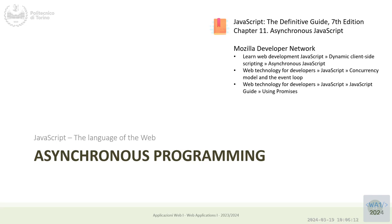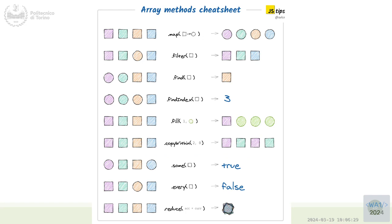You remember last week we focused on programming through callbacks. We saw that all the functional programming methods were working by providing a callback function that would do some part of the work — some comparison, some transformation, or whatever. All these functional programming methods required one callback function with a specific signature.